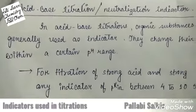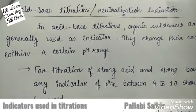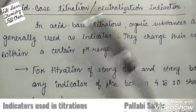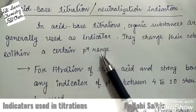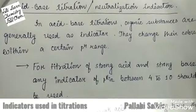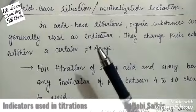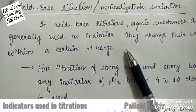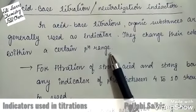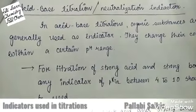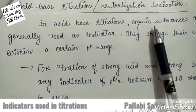Since we all know acid reacts with base to give neutral salt plus water, the acid-base titration is also known as neutralization titration. In acid-base titration, the indicator generally used is an organic substance, and they change their color within a certain pH range. When considering acid and base, the term pH will come; hence in low pH it will be acidic and in high pH it will be basic.